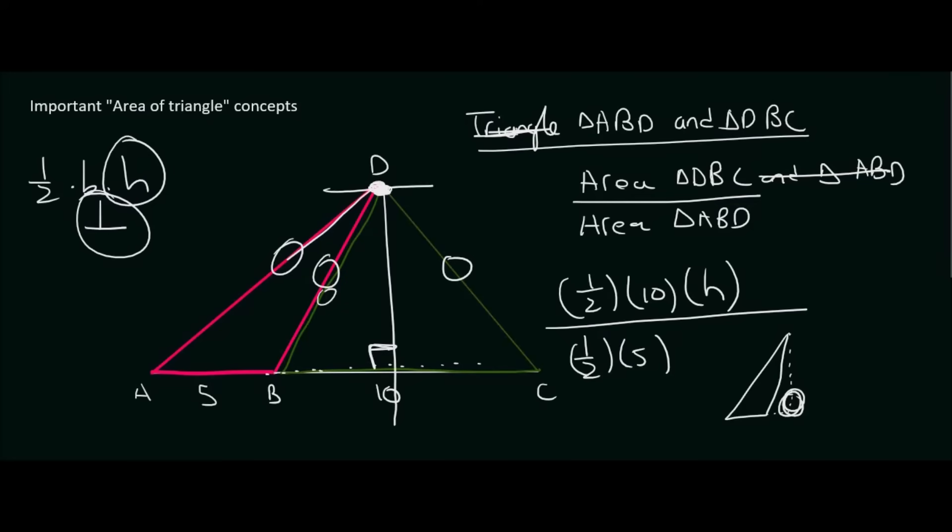The height doesn't have to physically be one of the lengths in the triangle. You just need to go from the top and draw a line that is perpendicular to the base. If you have to extend the base to make that possible, that's fine. But that doesn't change the base's length. These two triangles have the same height. So the H's cancel, even though we don't know what the height is. The halves cancel, and so we're simply left with 10 divided by 5, which is 2.